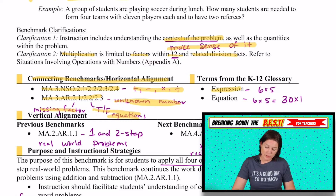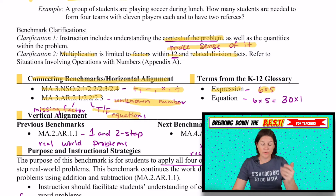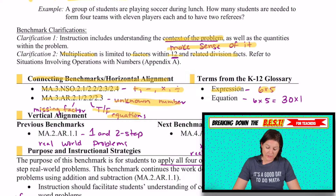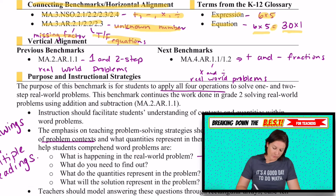For an expression, an example would be six times five, where we're not really looking at an equal sign — just the numbers and symbols. An equation is where we have an equal sign present, like an expression or a value on one side and an expression or a value on the other side.